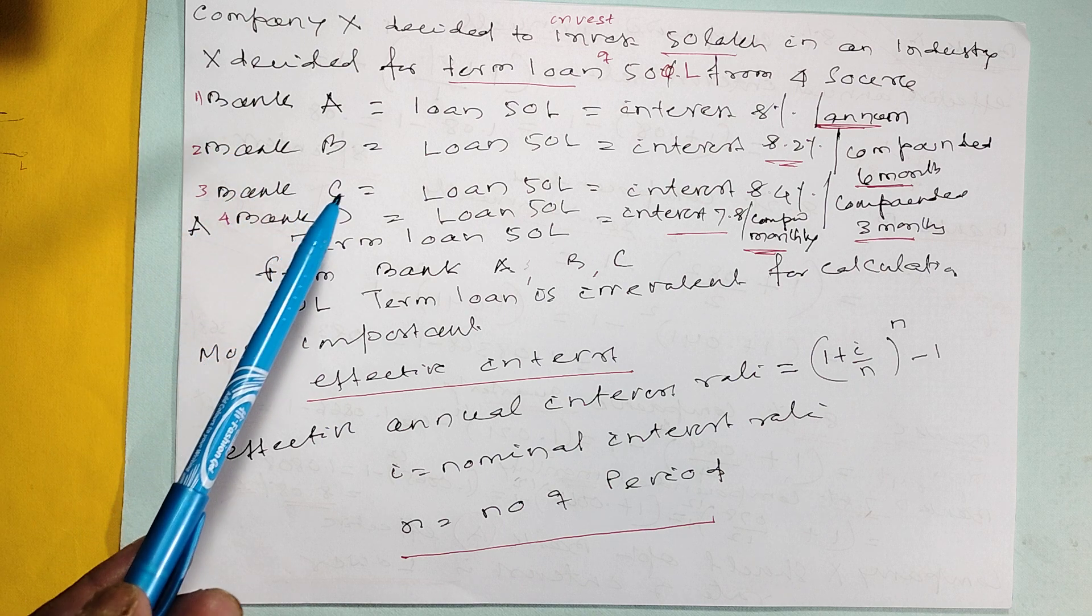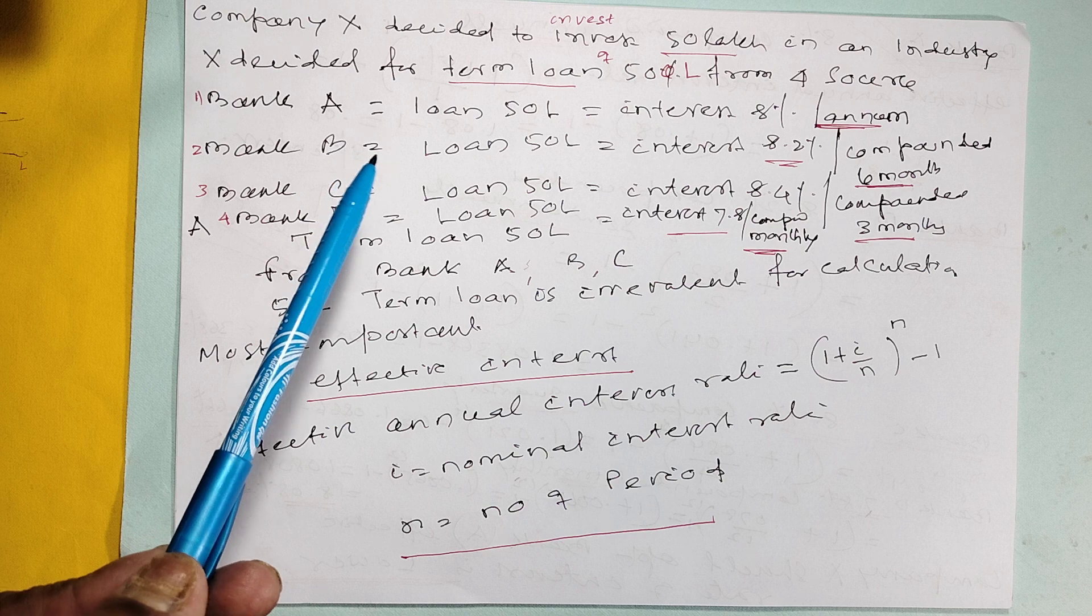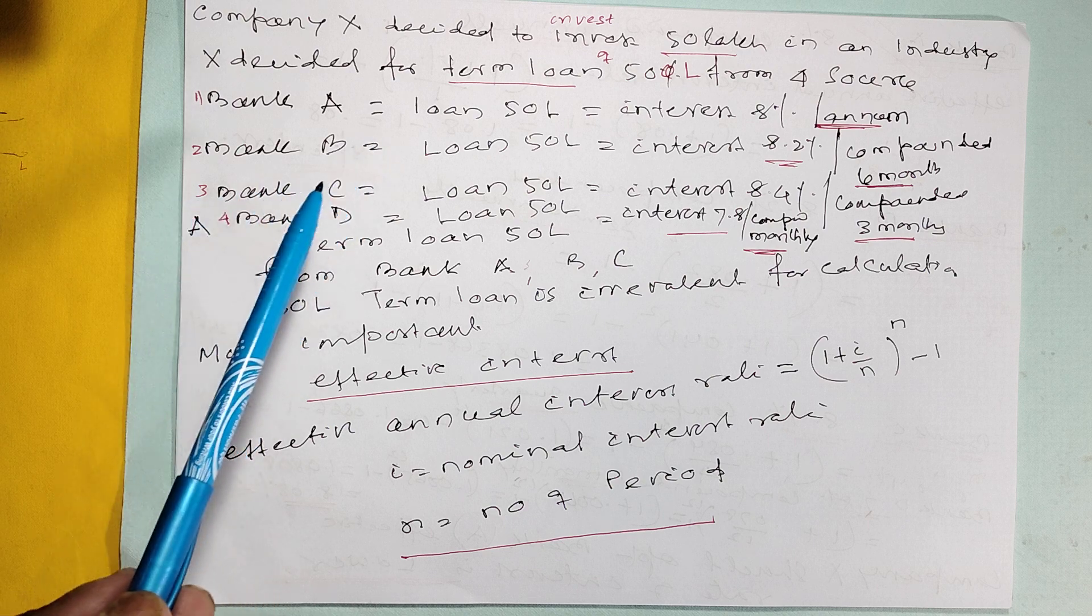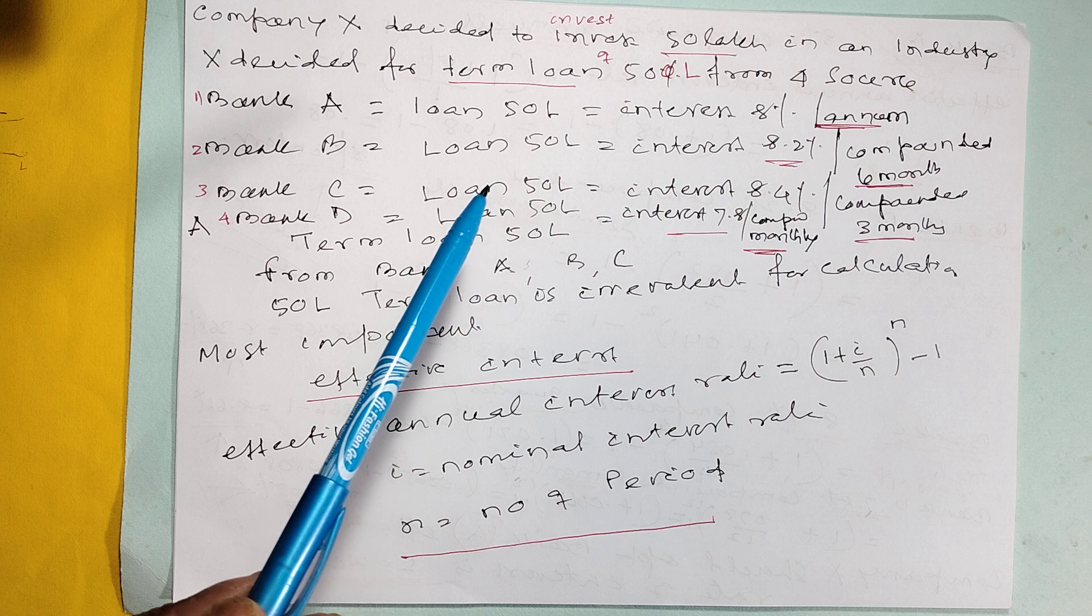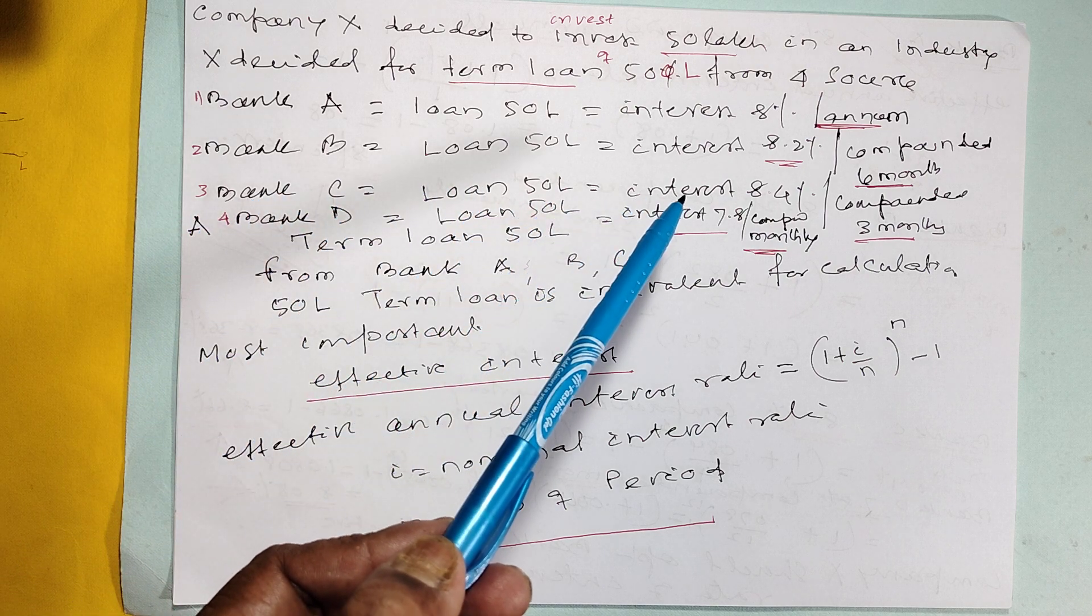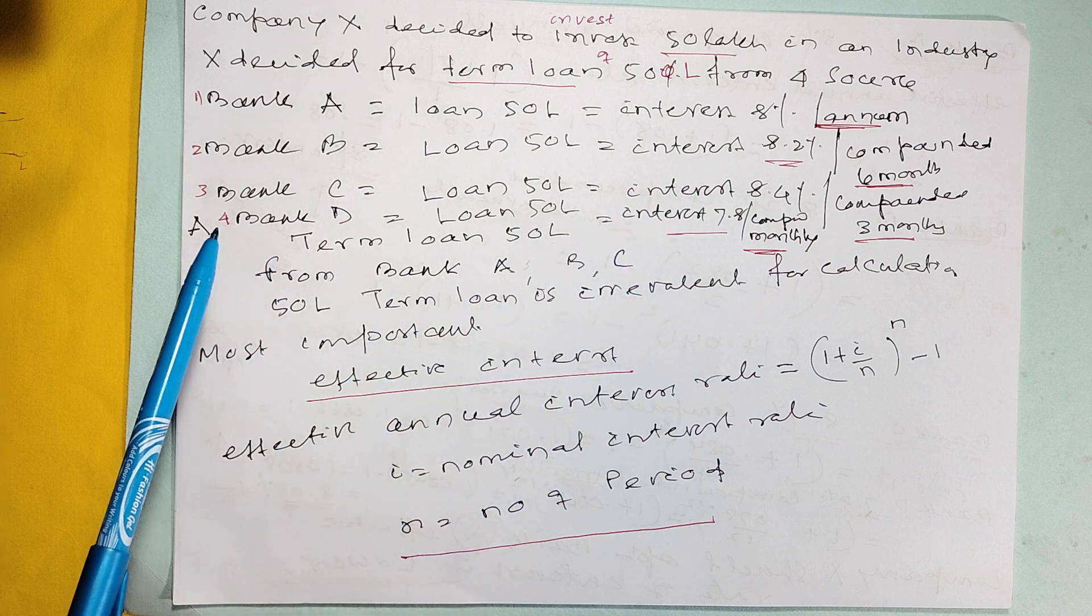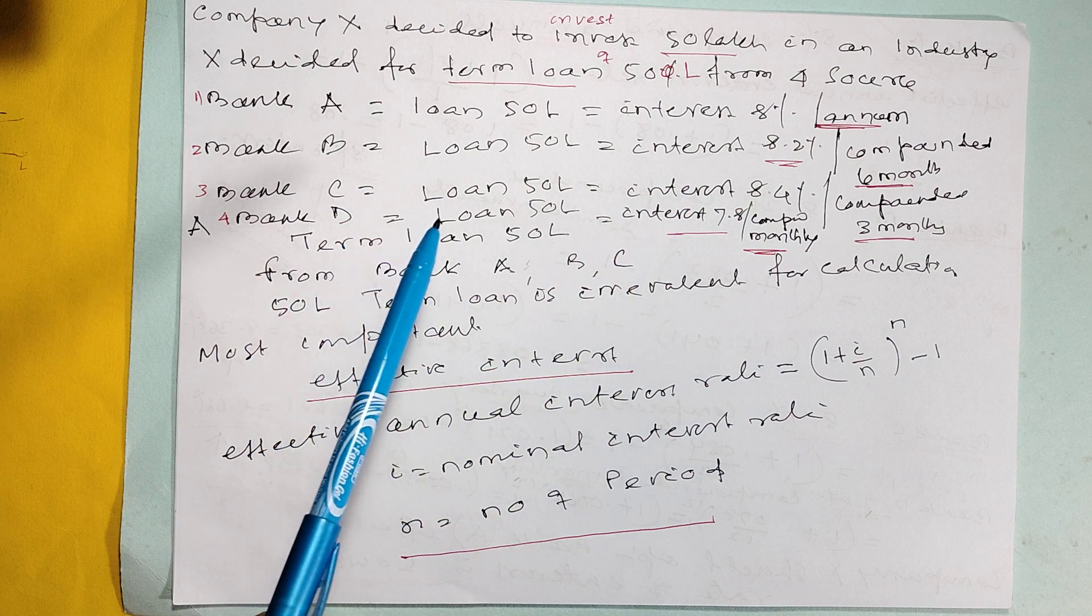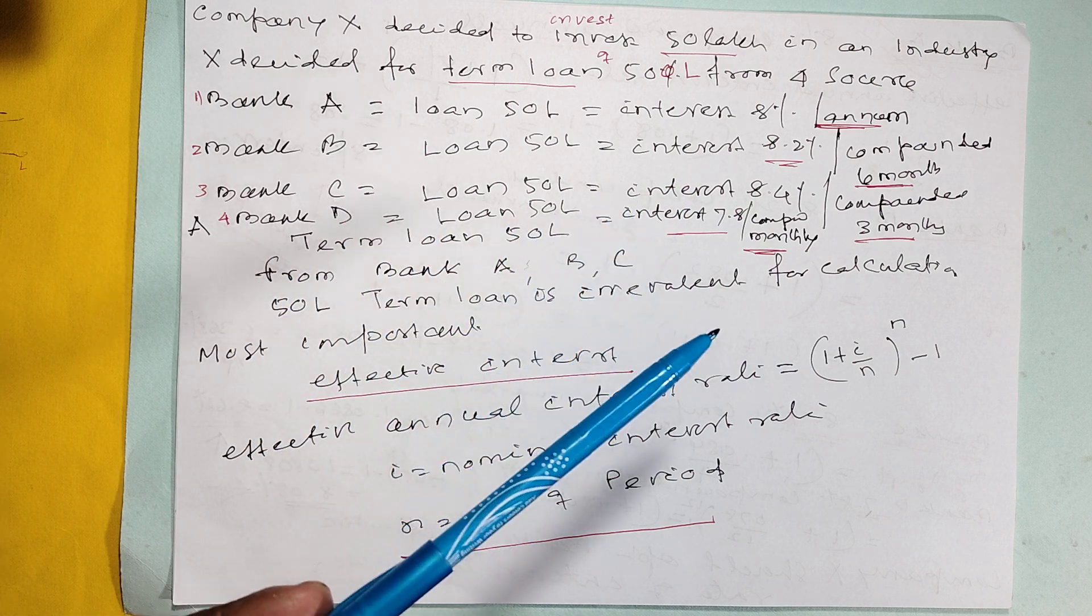Bank A interest 8 percent compounded annually. Bank B interest 8.2 percent compounded half-yearly. Bank C interest 8.4 percent compounded quarterly. And Bank D interest 7.8 percent compounded monthly.